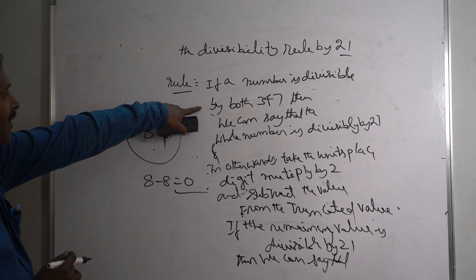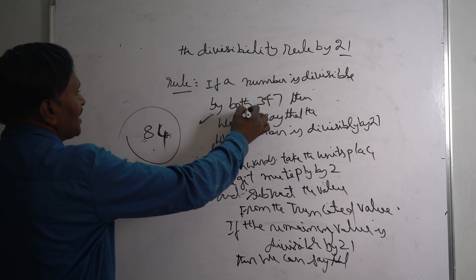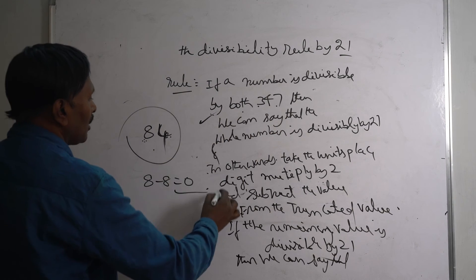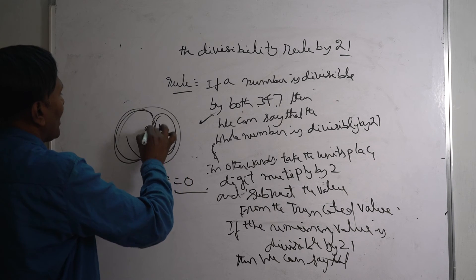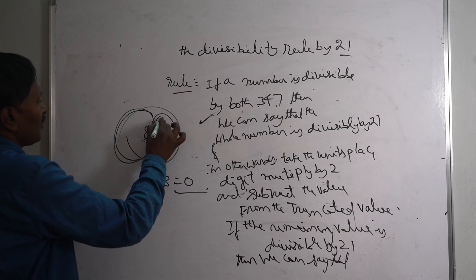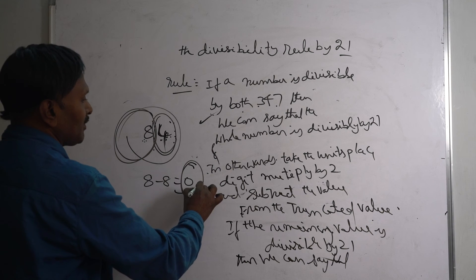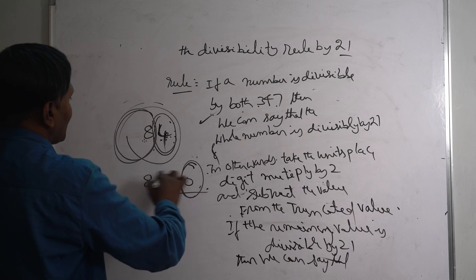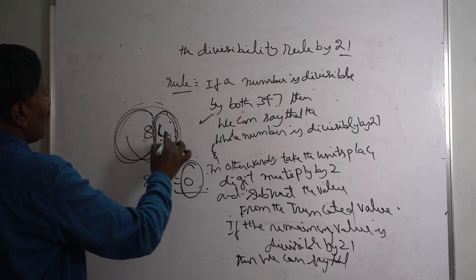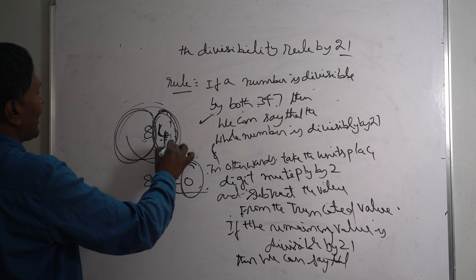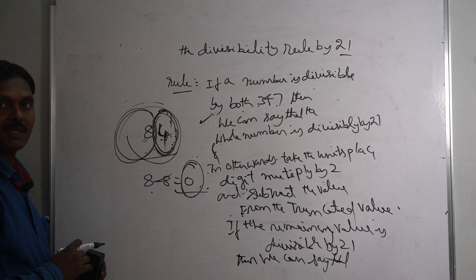With any number, we can check whether it is divisible by 21 using this method: if your number is divisible by both 3 and 7, or multiply the units place digit by 2 and subtract from the truncated value. If the resultant value is divisible by 21, then the whole number is divisible by 21. Continue till you get a small number. I hope you understood well. If you like this video, share it and subscribe. Thank you.